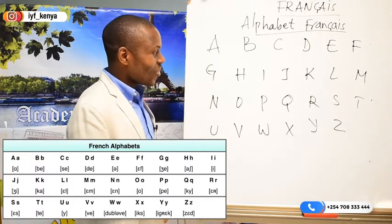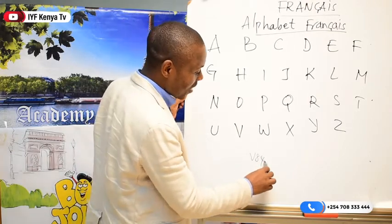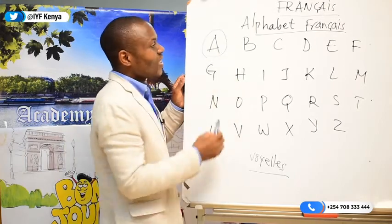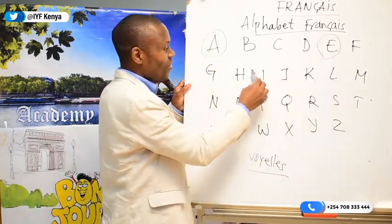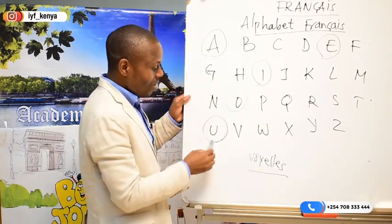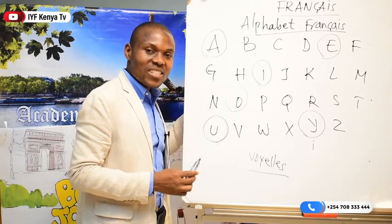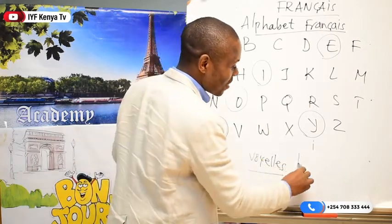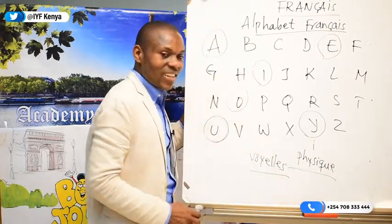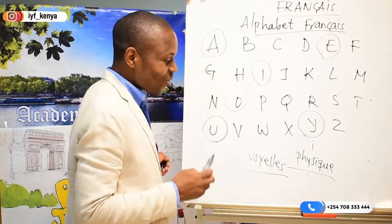Now, you know very well that we have the voyelle. The voyelle — we say it: voyelle. It's written like this in French. The voyelles are: A, E, I, O, U, and Y. The Y sounds like E when it is in a French sentence, as we said in our second lesson. For example, the word physique — the Y sounds like E. Don't forget that.